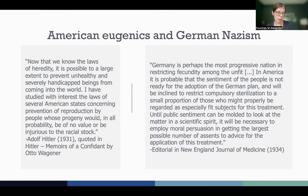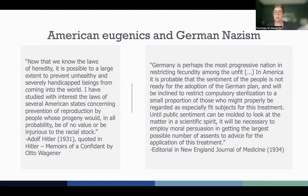The Rockefellers, who were oil and banking magnates, used their family wealth through their foundation to help support the German eugenics program. They funded the program where Joseph Mengele worked before he became the physician at Auschwitz, for which he is known as the Angel of Death. After a 1934 visit to Germany where over 5,000 people were being sterilized each month, a California eugenics leader stated to a colleague: 'You'll be interested to know that your work has played a powerful part in shaping the opinions of the group of intellectuals who are behind Hitler in this program. Everywhere I sensed that their opinions have been tremendously stimulated by American thought. You have really jolted into action a great government of 60 million people.'